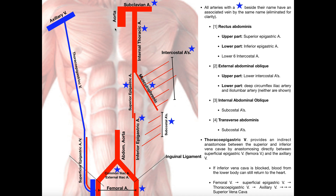Blood supply is going to originate from the heart. The aorta is going to come off of the heart. There are two subclavian arteries, but this would be the patient's left subclavian artery, which actually comes directly off of the arch of the aorta. From the subclavian artery, we have the internal thoracic artery that's going to be descending downward. The internal thoracic artery is really confined to the thoracic cavity — it doesn't actually go through the diaphragm. Another name for this artery is the internal mammary artery, because it's in the area where the mammary glands are, and some branches of it will actually serve the mammary glands.